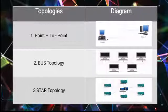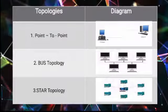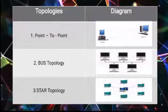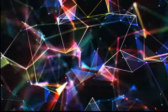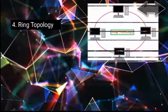In star topology, it is very clear from the diagram that there is one central hub and all other systems are connected to that central hub. Each device is connected to a central computer using a point-to-point connection, and the central server acts as a hub.